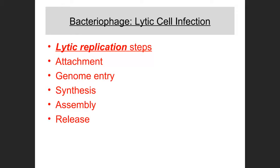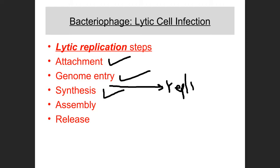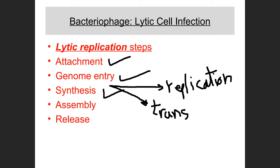The steps of lytic replication are: attachment of the virus to receptors on the host cell surface; entry of the genome into the host cell; synthesis, which includes replication of viral DNA, transcription, and translation; assembly of the newly made viral components into complete viral particles; and finally release of the virus. More than one viral particle is released — typically hundreds to thousands.